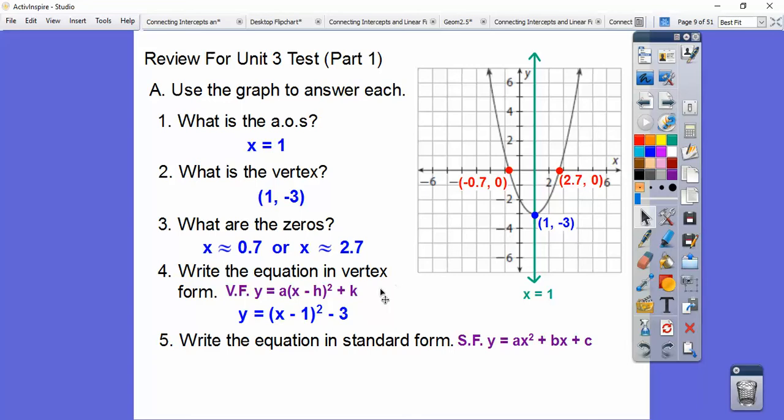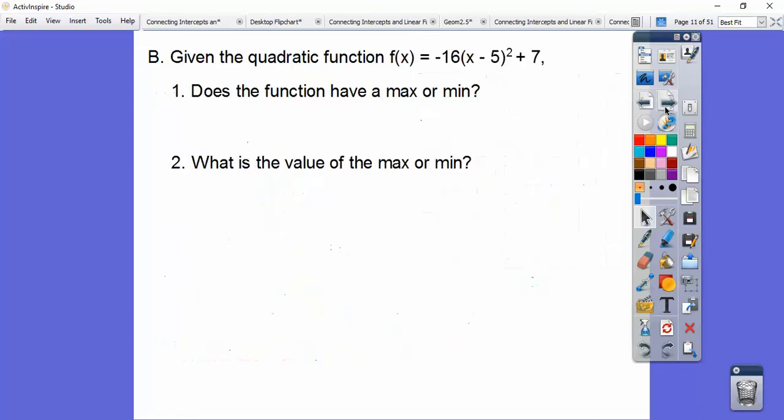And then to put that in standard form, we have to foil out x minus 1, x minus 1 right there. So I did that here in red, and then we've got to combine the plus 1 and the minus 3 right there, and that's going to give us minus 2.